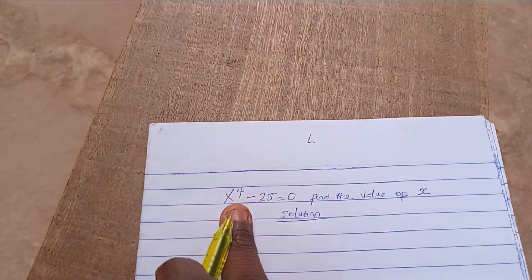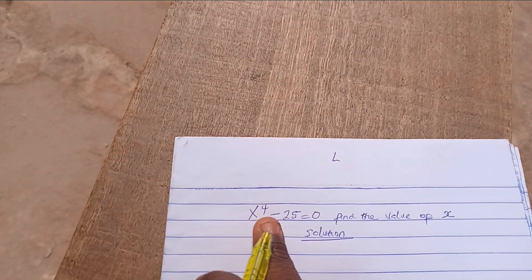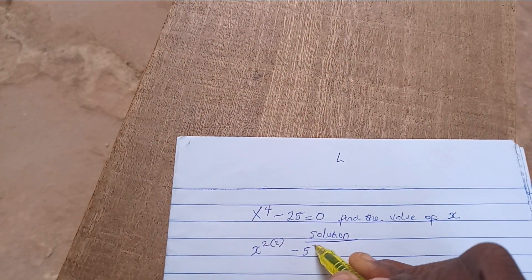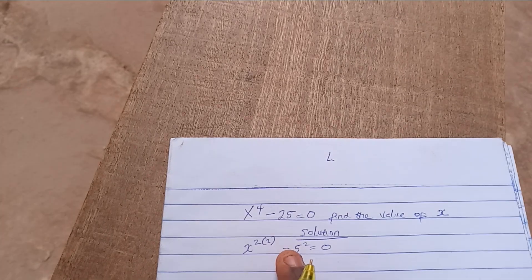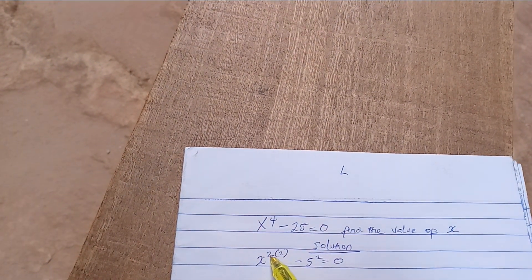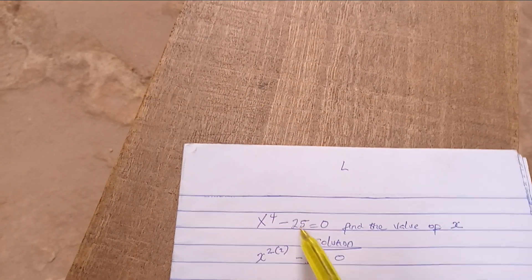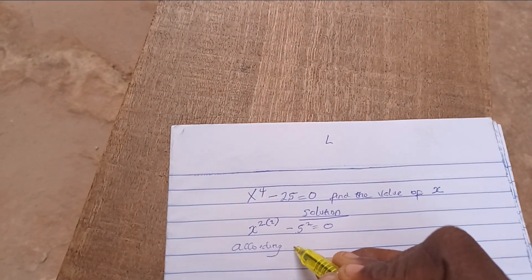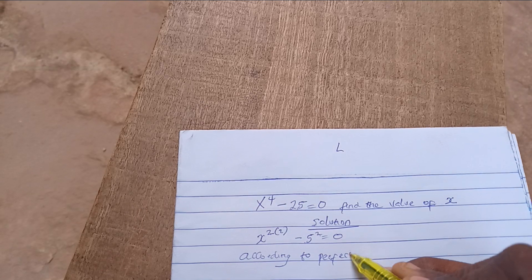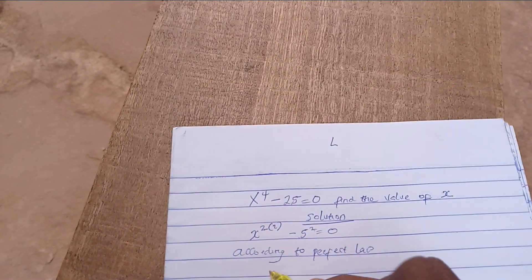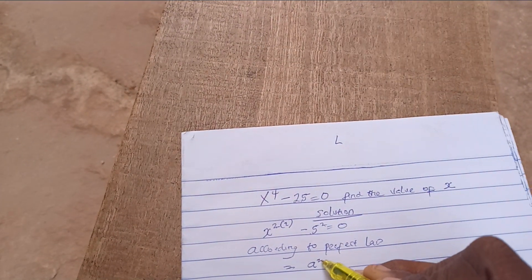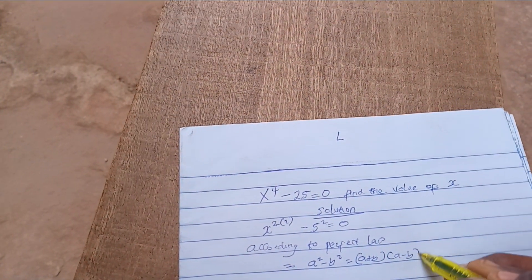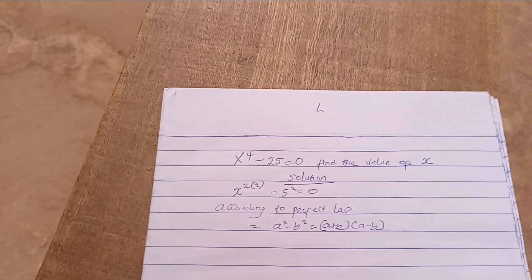For this expression, let's try to make it a perfect square. We rewrite it as x squared, squared, minus 5 squared equals zero. According to the difference of squares law, a squared minus b squared equals a plus b times a minus b.